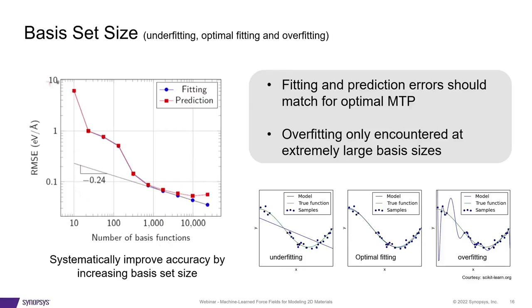On the other hand, an extremely large basis set leads to overfitting — fitting errors are very low but prediction errors are much higher. In this graphic, the model passes through every single training data point, leaving a large discrepancy in the interpolation regions. An optimal basis set gives roughly the same root mean square error in both fitting and prediction datasets, and this can be obtained by carefully tuning and selecting the right number of basis functions.